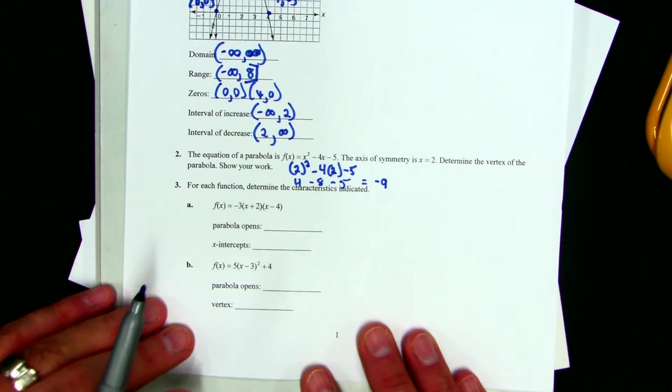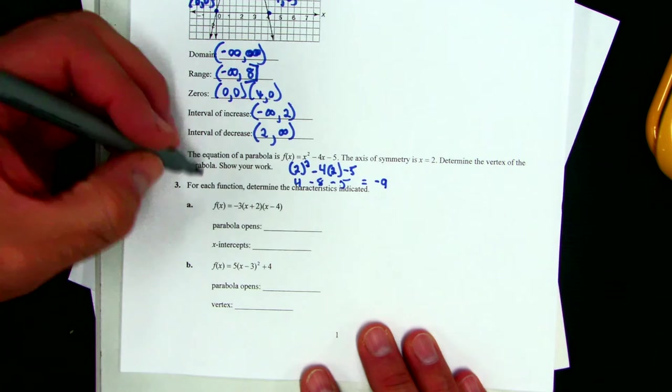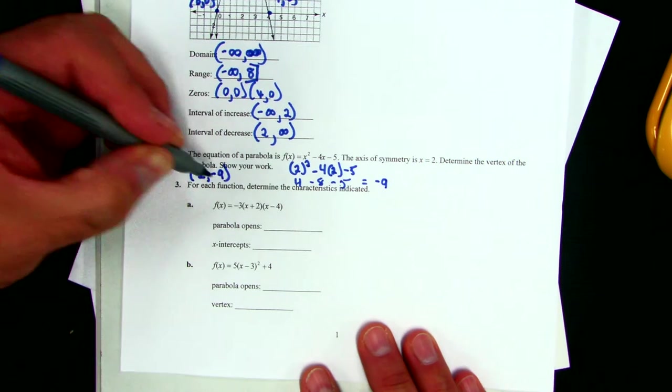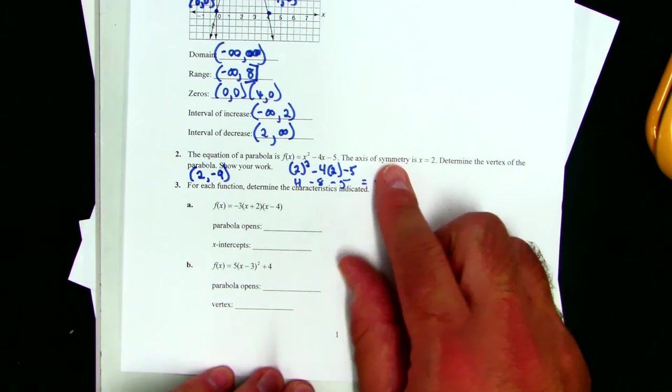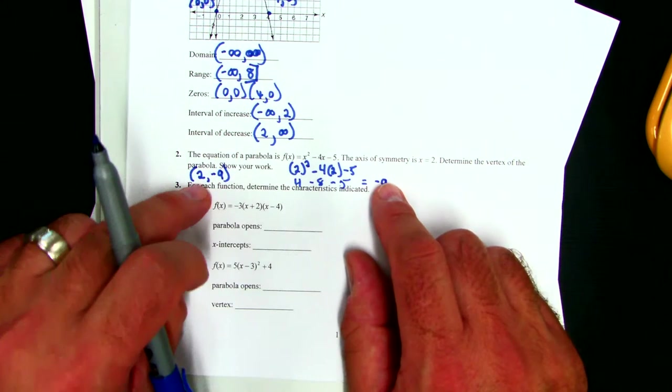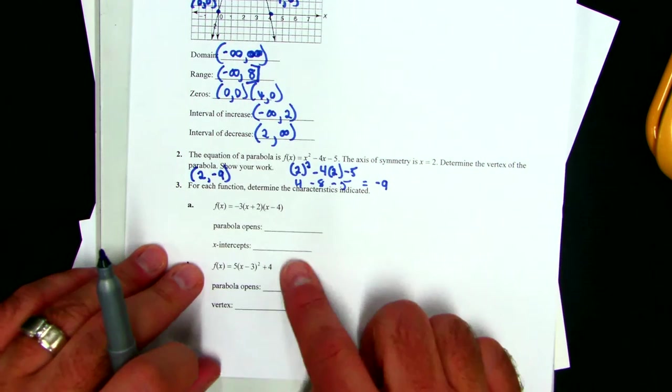The problem was is it says, what is the vertex? The vertex would be 2, negative 9. This is only half of the vertex. Your vertex is a point. All right, next one.